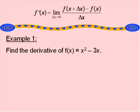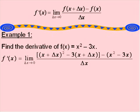Let's take a look at an example. Find the derivative of f of x equals x squared minus 3x. We will need to apply the limit definition.